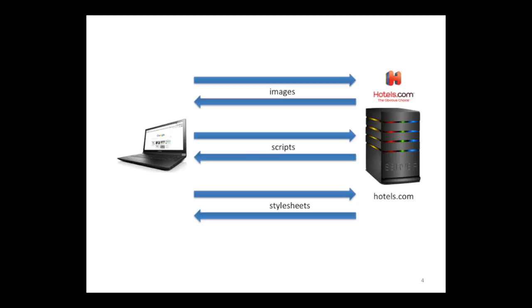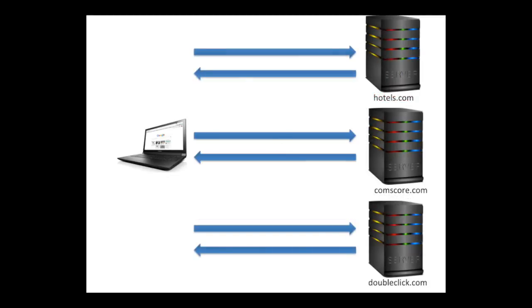A vast majority of requests from your browser are actually going to other servers as well. As a user, you probably don't even realize this, but if you peek under the hood of your browser, in the case of hotels.com, you'd notice that you are actually connecting to more than 50 different web servers not owned by hotels.com. These are third-party servers I'm going to call trackers — different companies tracking you and looking at which websites you visit, even when you're only going to hotels.com. You typed in hotels.com but didn't know you'd also send a request to commscore.com or doubleclick.com.